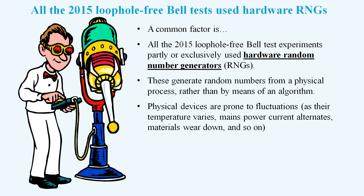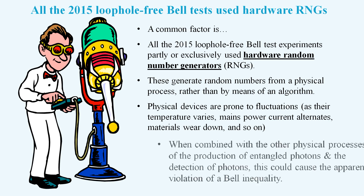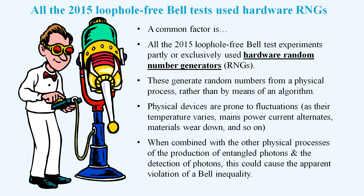Physical properties of materials can change due to things like temperature change, application of an electrical field, and so on. It is true that a bias in the random number generators alone would not be able to violate a Bell inequality. But if the production of the photon pairs also has some bias, then the combined effect could cause a violation.